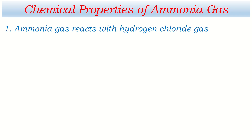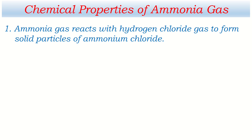Number 1: Ammonia gas reacts with hydrogen chloride gas to form solid particles of ammonium chloride. Both gases — ammonia and hydrogen chloride — are colorless, but when they react with each other, white fume appears which is made up of ammonium chloride.